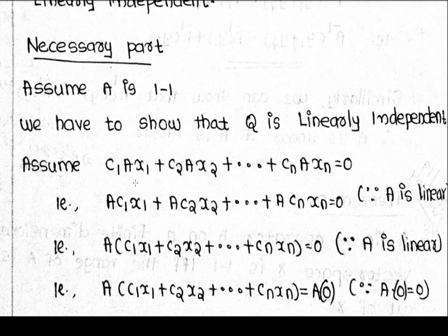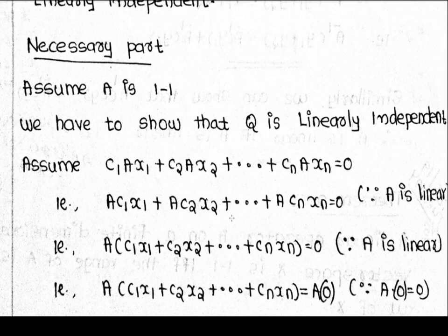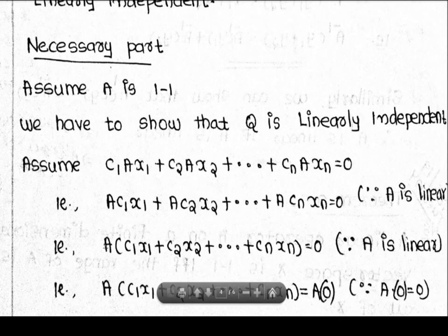Suppose c1·A(x1) + c2·A(x2) + ... + cn·A(xn) = 0 vector. Substituting using linearity: A(c1·x1) + A(c2·x2) + ... + A(cn·xn) = 0 vector. By linearity, A(c1·x1 + c2·x2 + ... + cn·xn) = 0 vector.